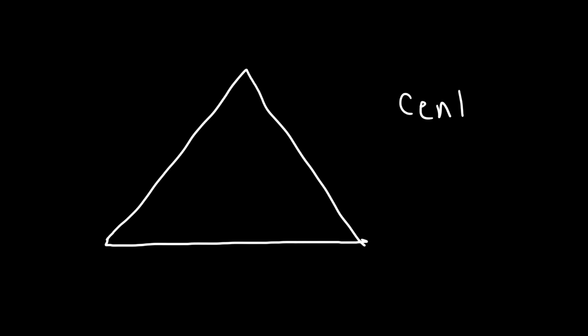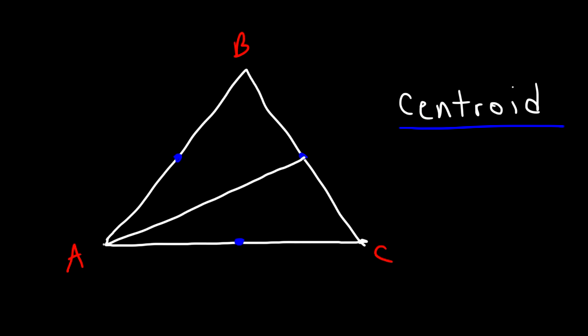So let's talk about the centroid of a triangle. The centroid can be found by the intersection of the three medians of a triangle. Let's identify the midpoint of each side, and then draw a line from the vertex to the midpoint of the other side. So the centroid is approximately in that region. Like the in-center, the centroid always lies inside of the triangle.